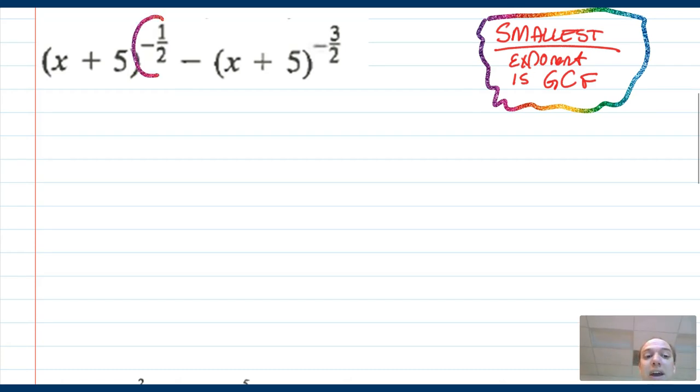You might think that one half is the smallest exponent, but remember that negative three halves is actually smaller than one half, negative one half. So this term is the piece that we're going to try to factor out of both terms, even though three halves seems larger.